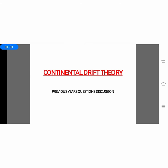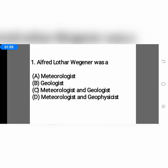Let's go to the first question. Alfred Wegener was: option A, meteorologist; option B, geologist; option C, meteorologist and geologist; or option D, meteorologist and geophysicist. We already discussed this in the last video — the answer is option D, meteorologist and geophysicist.